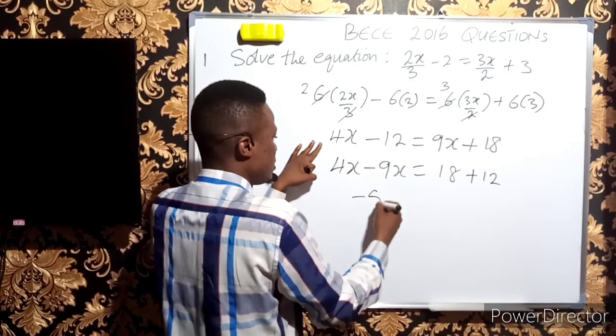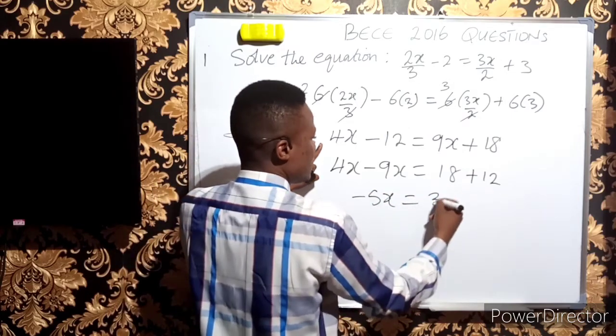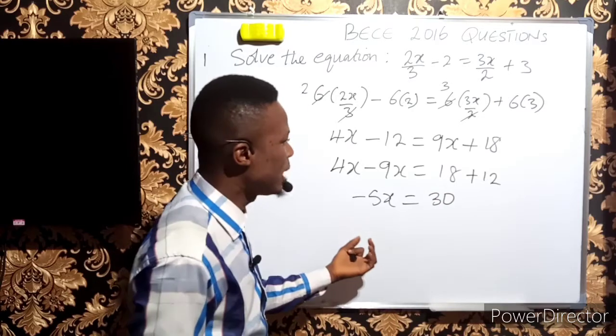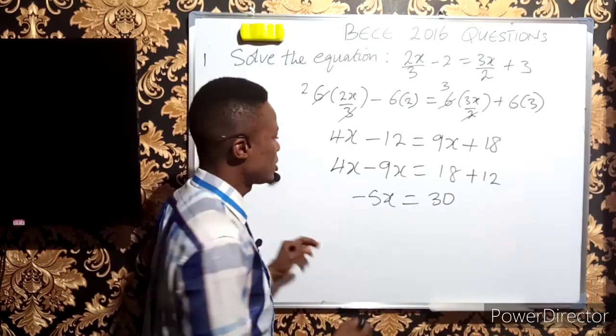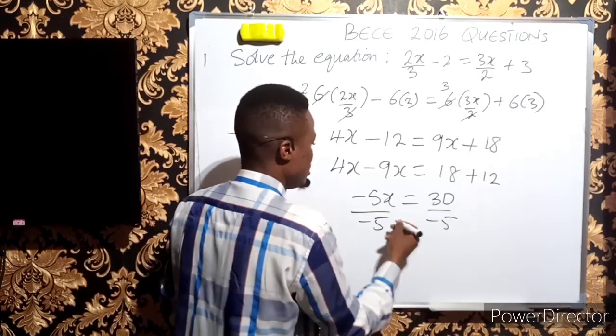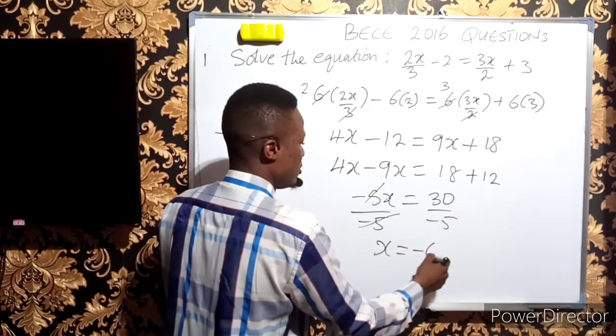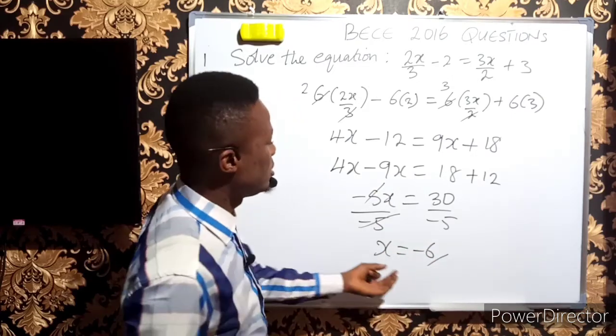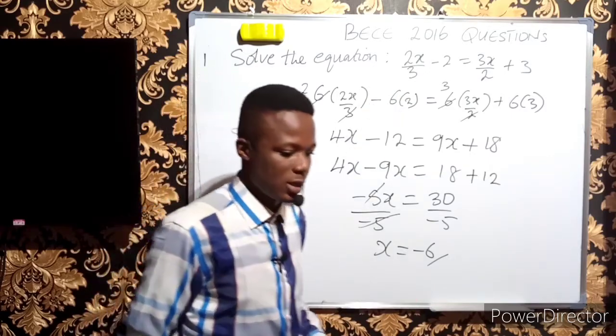To get the value of x, I divide everything by -5. So -5/-5 cancels out, and 30/-5 equals -6. The value of x in this equation is -6. Let us take the next question.